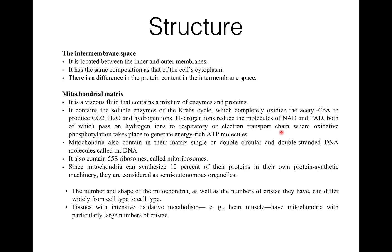The number and shape of the mitochondria as well as the number of cristae can differ widely from one cell type to another. Tissues with extensive oxidative metabolism like heart muscles have mitochondria with particularly large numbers of cristae.